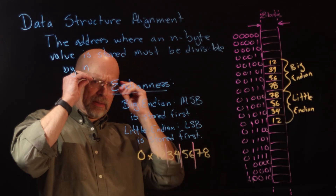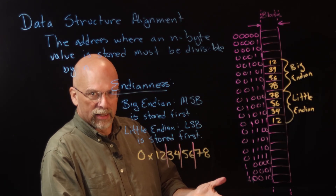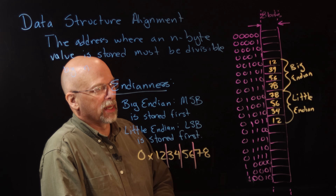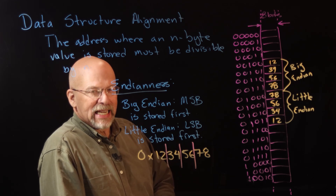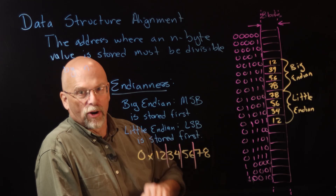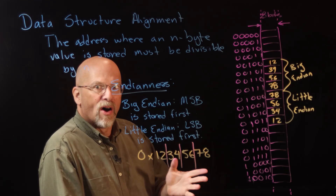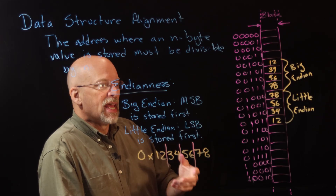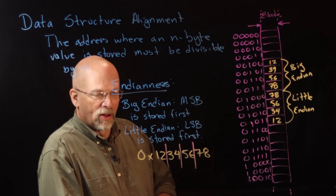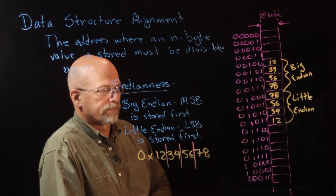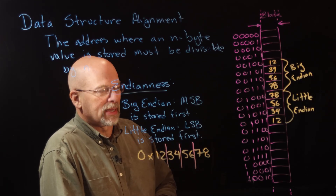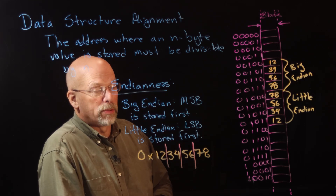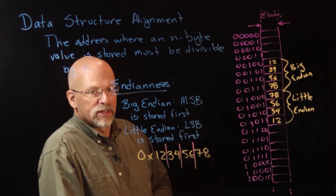You might think it's not a big deal — if you store data one way you read it the same way. That's true, except what if you're sharing data with another processor using a different architecture and a different endianness? All of your values will appear backwards. There has to be some identifier in files that says which endianness was used when writing. The key takeaway is that using caches and transferring data as blocks has a real effect on how data is stored in memory.